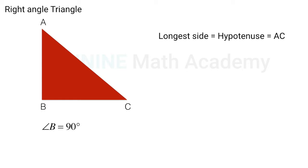So the longest side of the triangle is also known as hypotenuse. In our case it is AC.